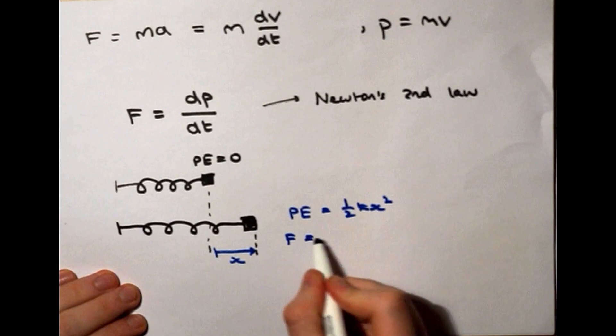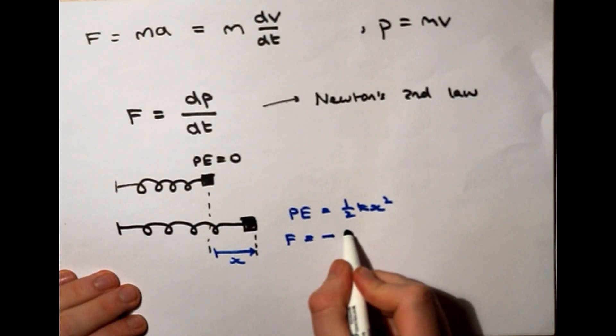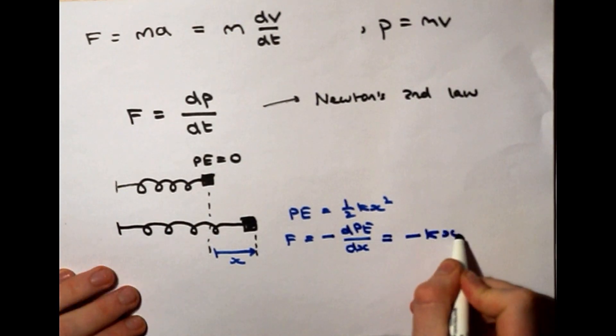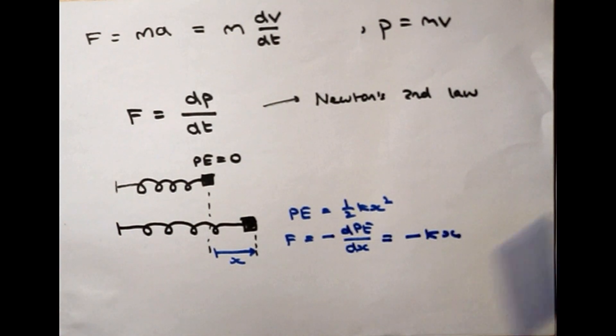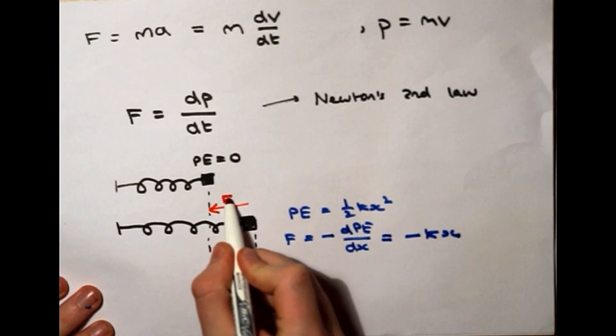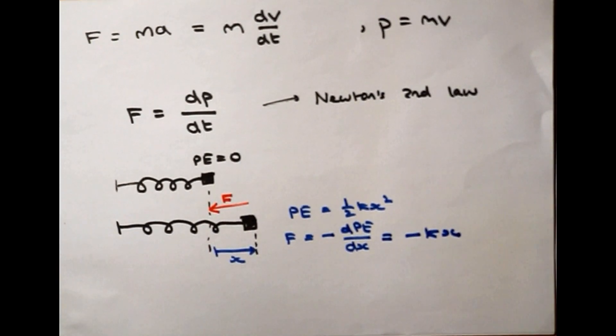And the force on that mass is equal to the negative of the derivative of that potential energy with respect to position, which equals negative kx. The force acts in the opposite direction to the direction of extension or compression.